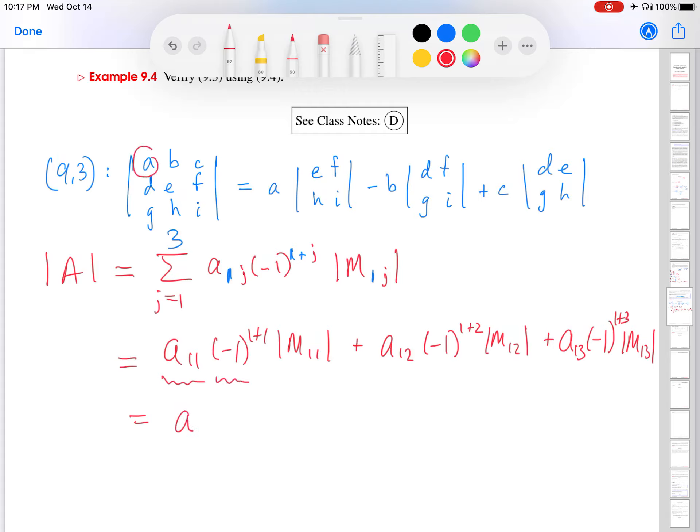Minus 1 squared is positive. And then m1,1 is the matrix obtained by deleting the first row and the first column. So that's going to be determinant of E, F, H, I. You can see already how this is reproducing the first term up here. So we are on the right track.